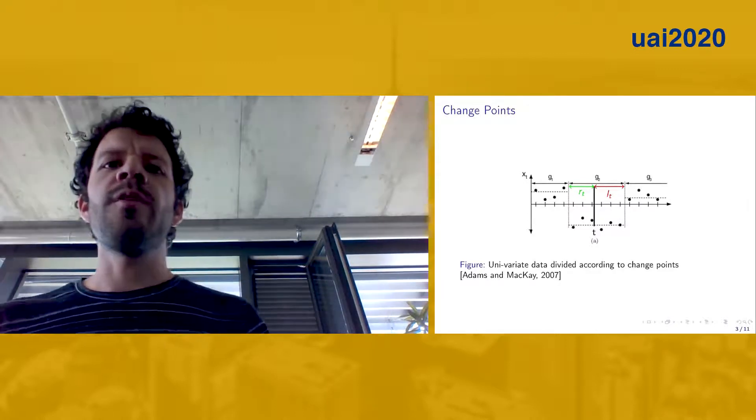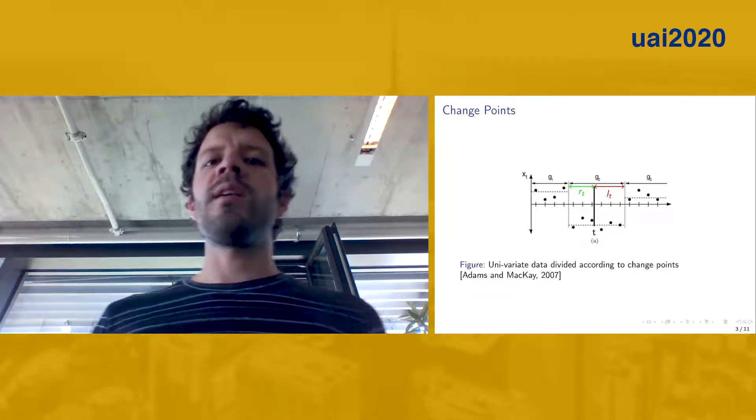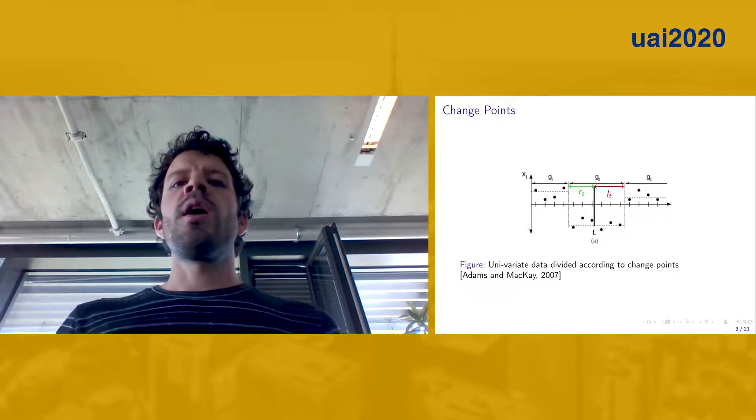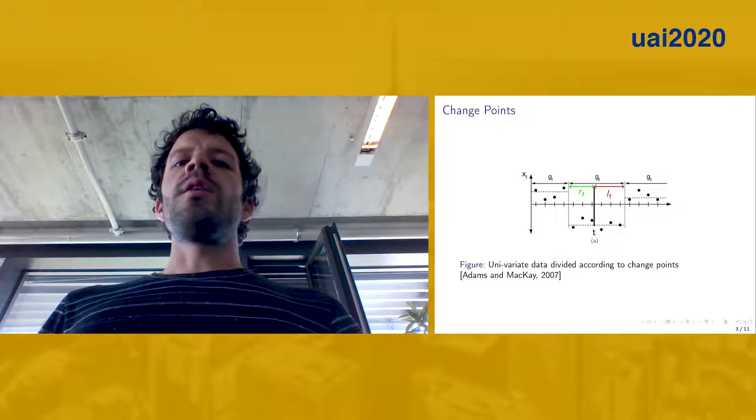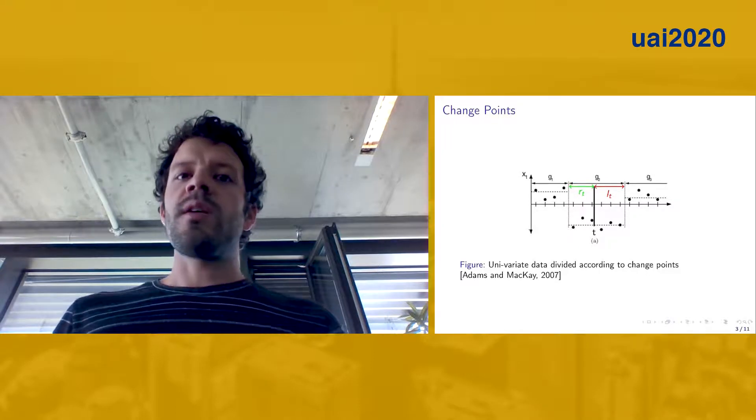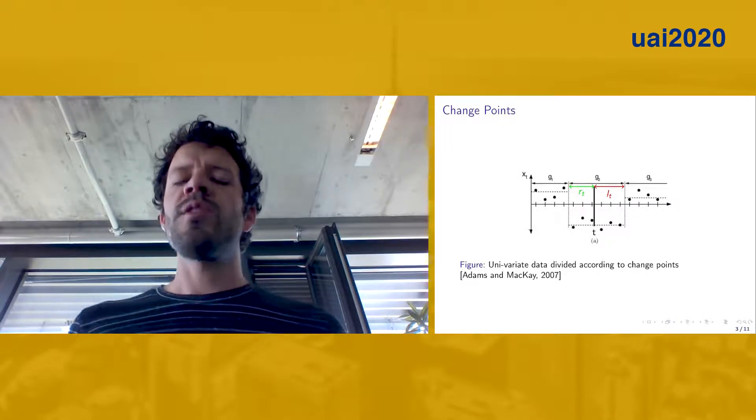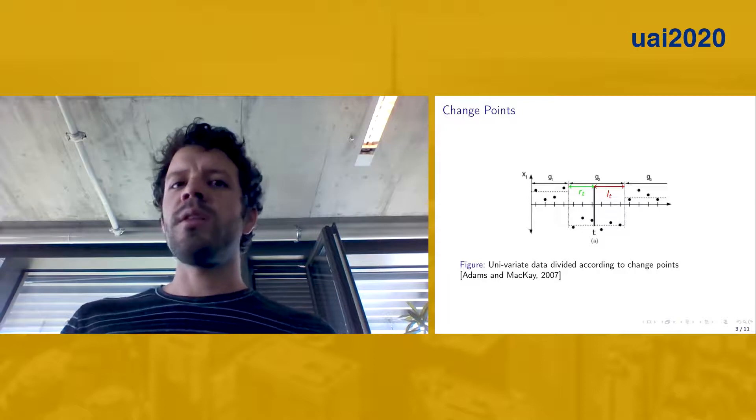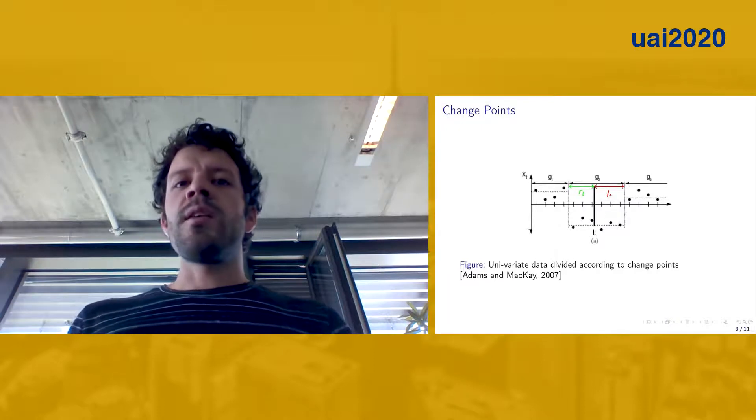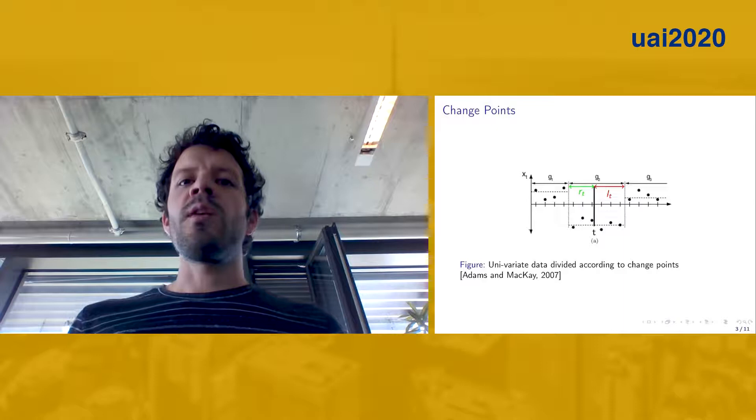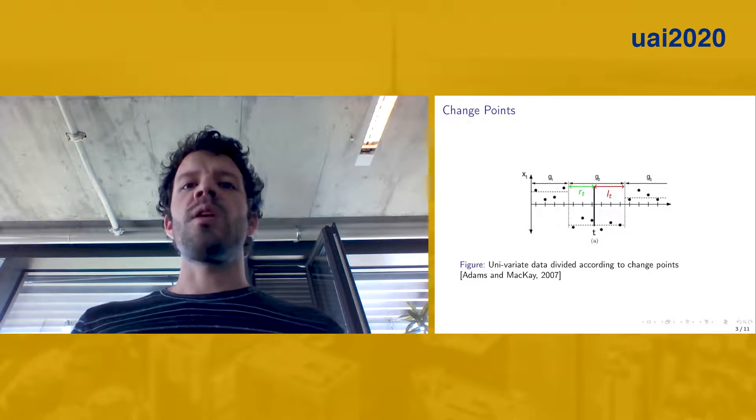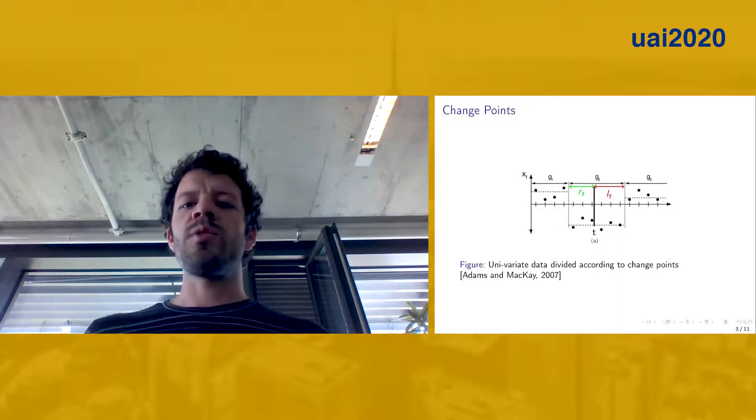We argue that performing inference over these quantities is of practical importance because it could potentially support us in the planning of interventions, for example in the medical domain, and ultimately it could enable our models to be actionable. We will showcase a couple of examples at the end of the talk.